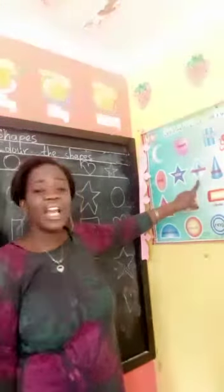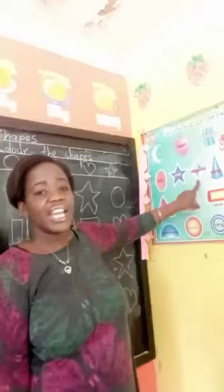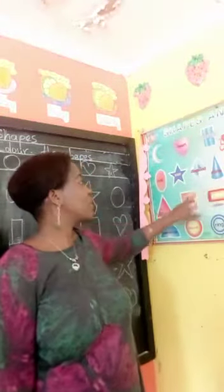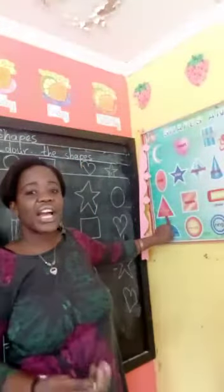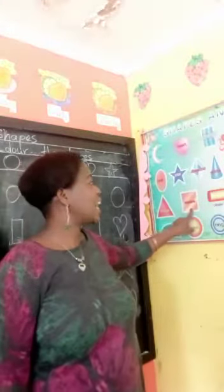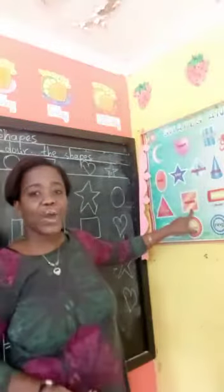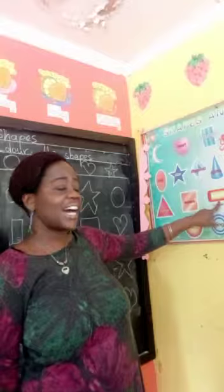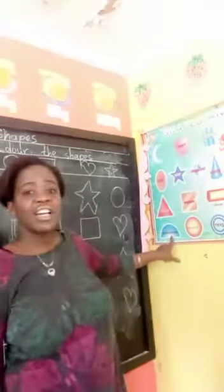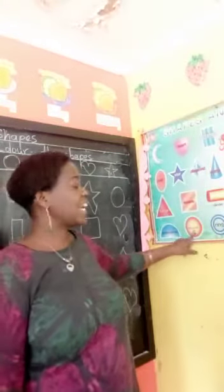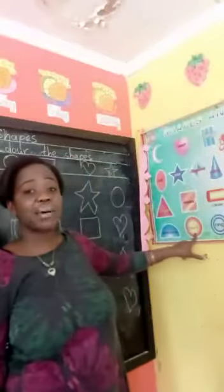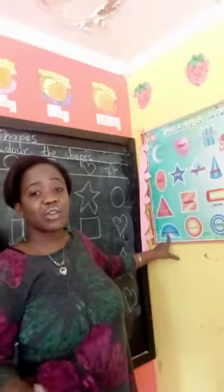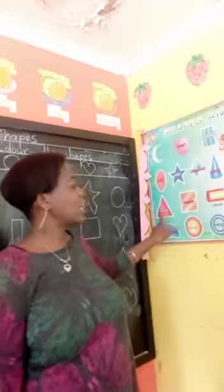Then we have diamond, and here we have cone like the cone ice cream, here we have triangle like a samosa, and here we have square like a television, here we have cylinder, then here we have semi-circle, and here we have circle like a chapati. This semi-circle looks like a slice of watermelon that we did last week.